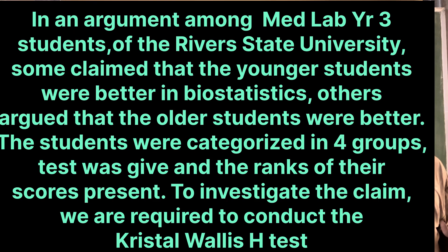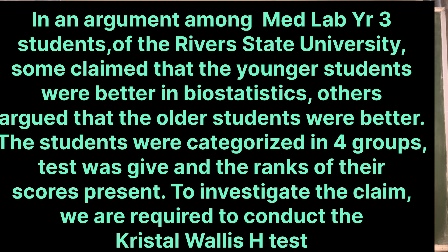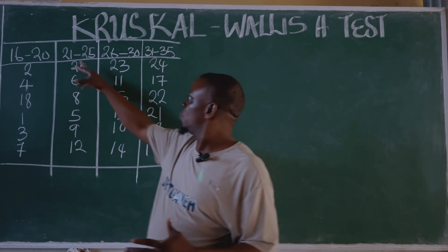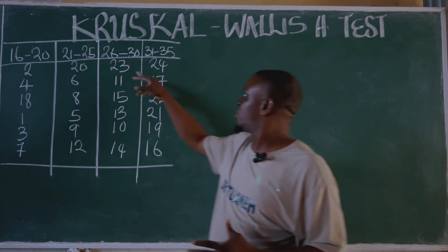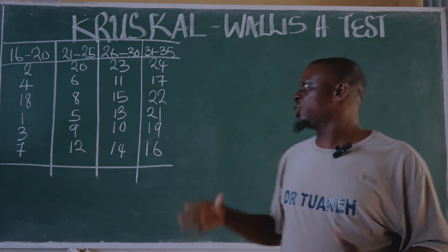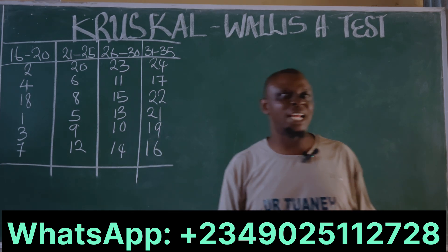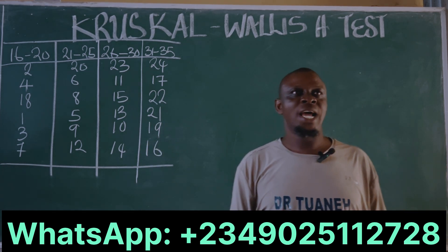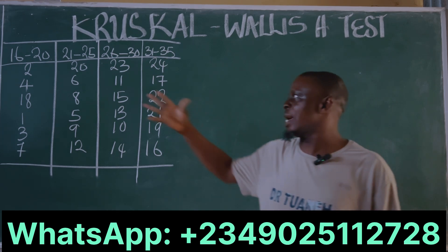In a very heated argument among a med lab with three students of Riverside University, some claimed that the younger students were better in vital statistics, while others claimed the older ones were better. To investigate this claim, students within the ages of 16 to 20, 21 to 25, 26 to 30, and 30 to 35 years were grouped, and in each group six students were randomly selected. The rank of the scores are tabulated below.